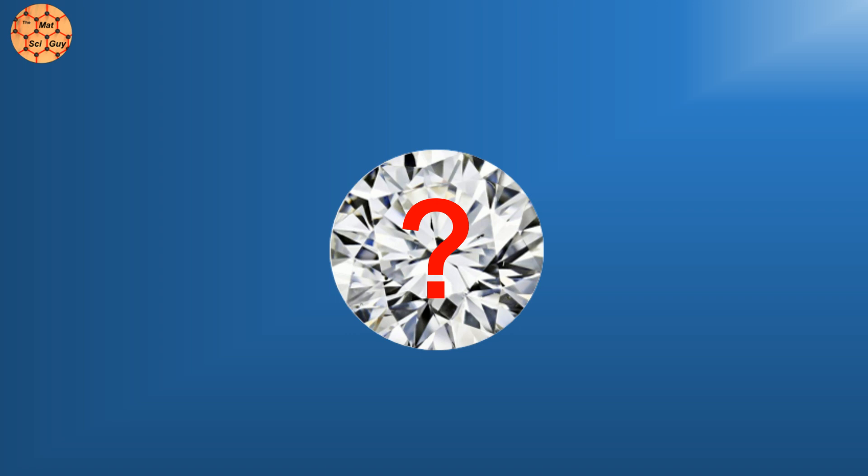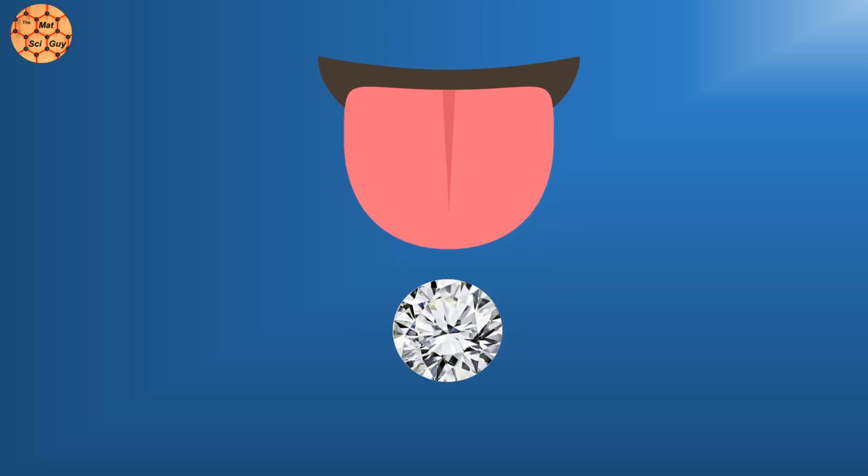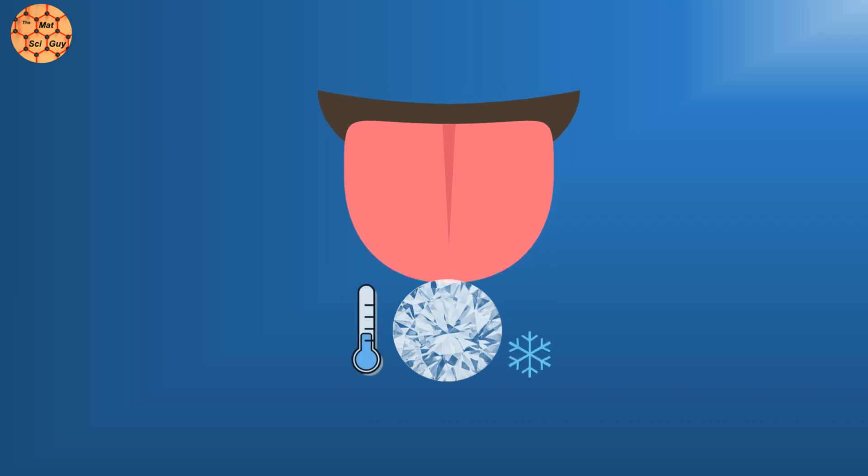Unlike cubic zirconia, diamond is a thermal conductor. If you touch the tip of your tongue to a real diamond that's near room temperature, it should feel cool, like a metal. This is because the outstanding thermal conductivity of diamond is drawing the heat away from your tongue.